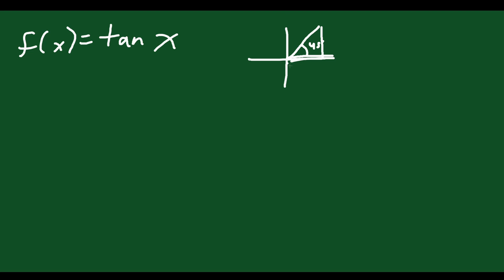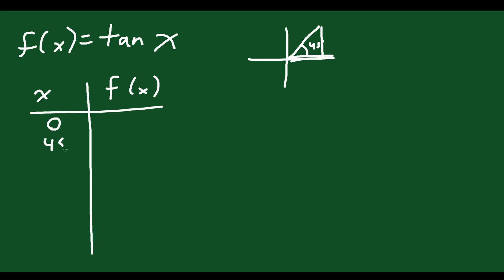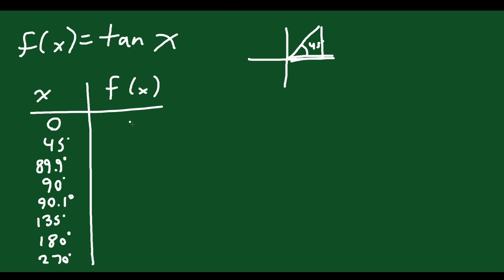For tan, we run into this issue where there are undefined points. If you try to make a table of values, you'll see this. Let's plug in some values for x, like zero degrees, 45 degrees, really close to 90 degrees — say 89.9 degrees — then 90 degrees, then 90.1 degrees, just to make a point. Then 135, 180, 270 degrees, and so on. At zero, the slope is zero. At 45, tan of 45 degrees is one. At 89.9, if you type tan of 89.9 into your calculator, you get 570-something — a big number.